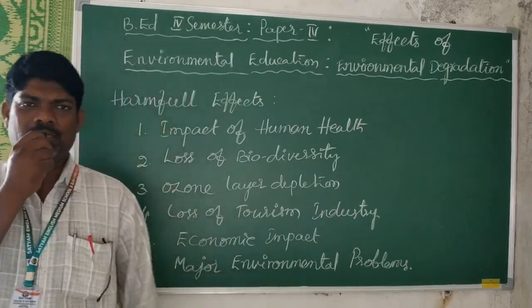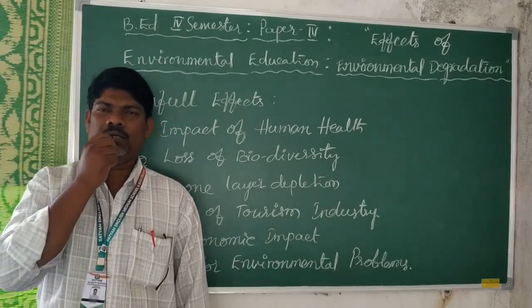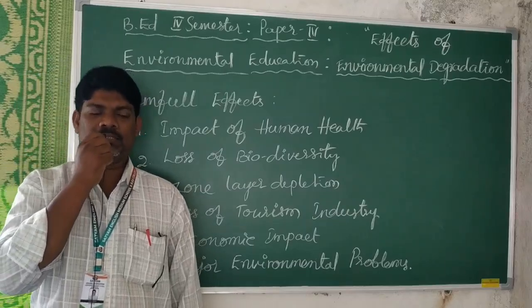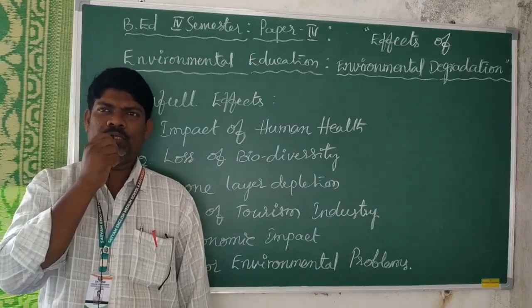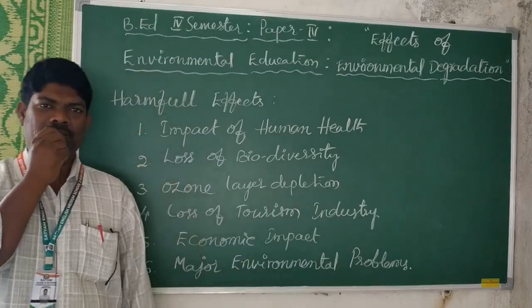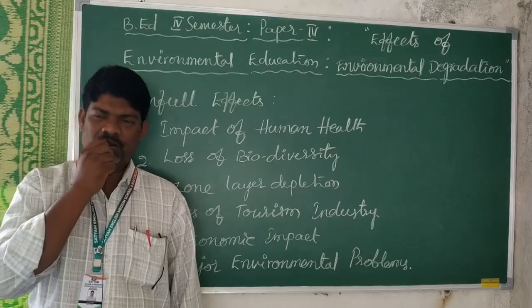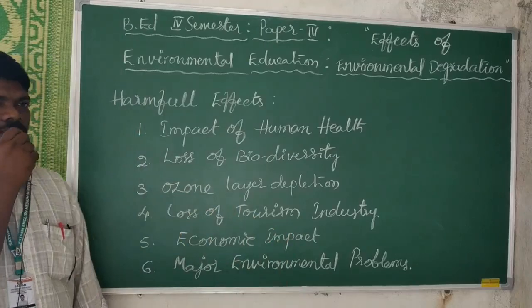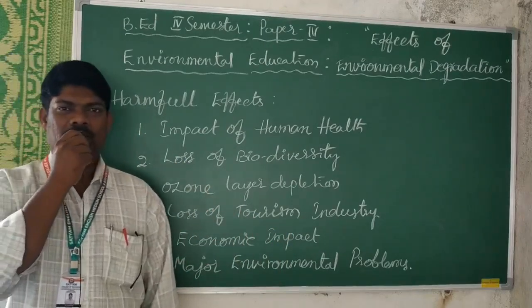Generally, I told you what is meant by environmental degradation, and the main factors and effects of environmental degradation were already discussed in earlier classes. The deterioration of the environment due to some factors and effects is called environmental degradation. The main harmful effects include impact on human health, loss of biodiversity, and ozone layer depletion. Let us see them one by one.